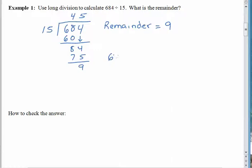If we were trying to write all of this down in a condensed way, we would say 684 divided by 15 is equal to 45. The capital R stands for remainder. So with a remainder of 9.